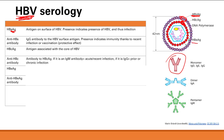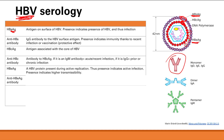We also look at hepatitis B E antigen (HBeAg). This is a protein present only during active replication. If it's present, it means you have an active infection with high transmissibility. If you have an antibody against that, it means you have reduced risk of transmission.